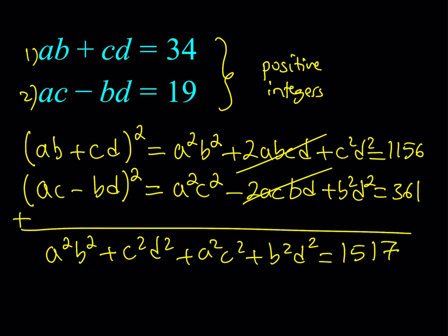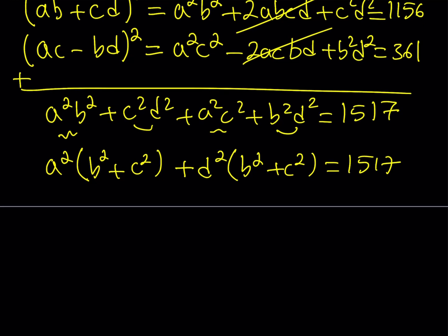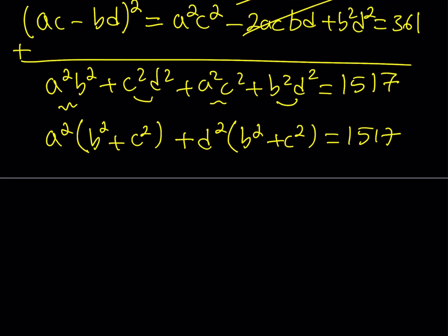What is so cool about this is that this expression is factorable. Why? Because you can factor by grouping. If you consider the first and third, you can take out A², giving you B² plus C². Then these two terms have a common factor of D², and you get the same one, B² plus C². Cool.